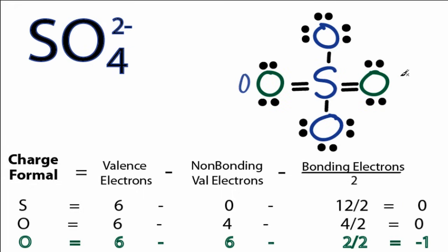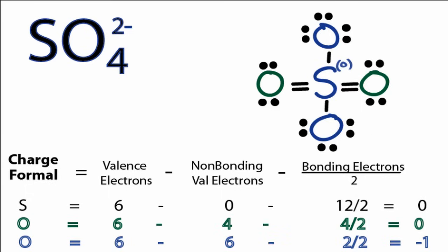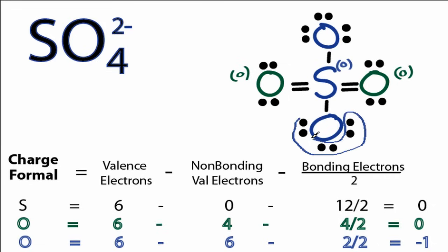So I've moved electrons from the outside of these 2 green oxygens into the middle to form double bonds. Let's see how that changes the formal charges. For sulfur: 6 minus 0 non-bonding, and now we have 12 total bonding electrons. 6 minus 6 gives us 0, so the formal charge on the sulfur is 0. If we look at the green oxygens, we have 6 minus 4 non-bonding, and then 4 bonding divided by 2 — 6 minus 4 minus 2 is 0. Finally, looking at the blue oxygens, we have 6 minus 6 non-bonding, and then 2 bonding divided by 2 — 6 minus 6 minus 1 is minus 1.